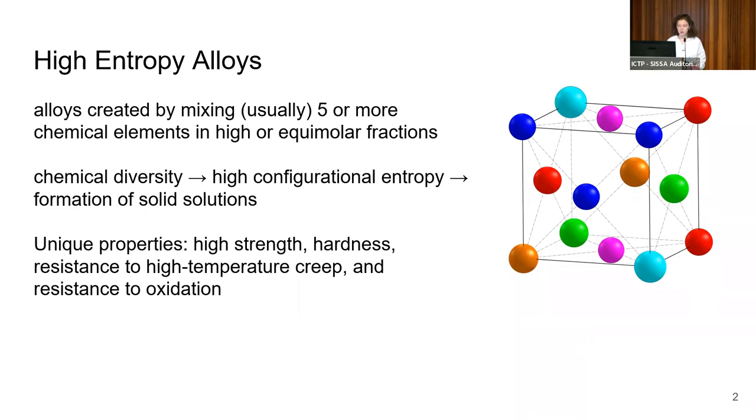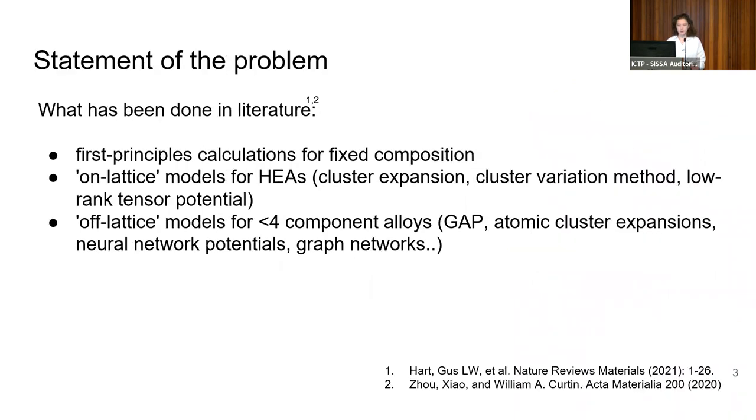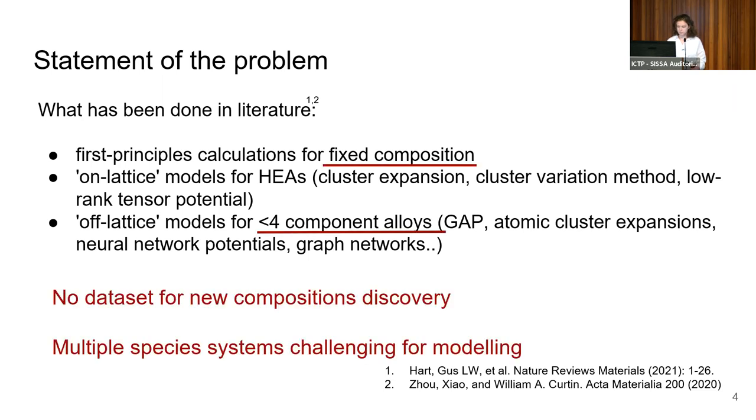These systems are quite challenging for modeling because of their chemical diversity. What has been done so far in the literature—many nice works about high-entropy alloys that we can categorize in three major lines: first principle calculations on lattice models, but most study four, rarely five component alloys and very narrow phase spaces. Another problem is that there is no dataset available in the community which would help us get insightful information about phase stabilities, perform discovery exercises, predict new phases of high-entropy alloys, and facilitate combinatorial search.